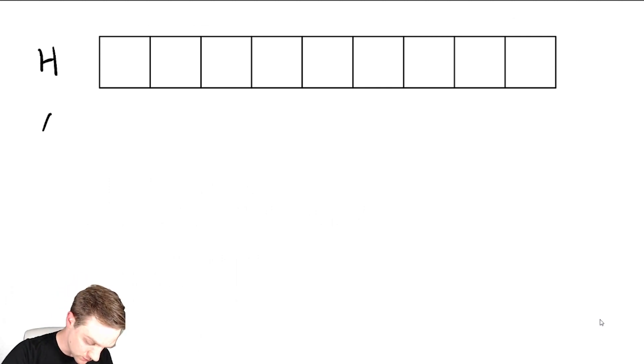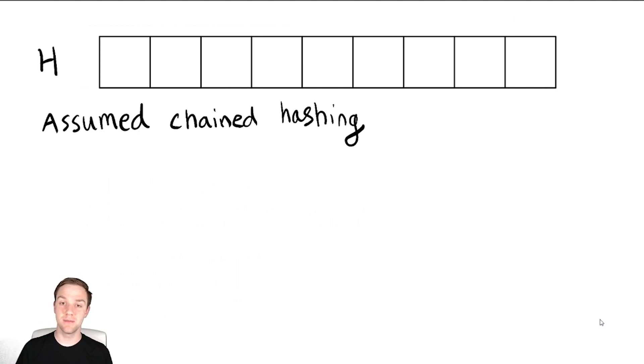For this, we're going to assume chained hashing. With that assumption in mind, we're going to do a lot of insertions and see how it affects everything. I'm going to move that assumption down a little bit, and we'll see why we need to do that as we go through the example.